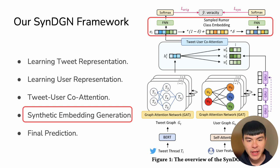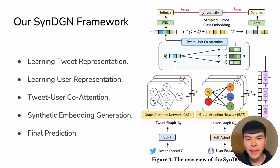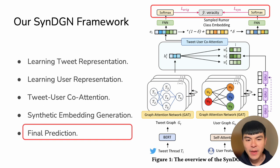Then we perform synthetic embedding generation on the minority class to oversample the minority non-rumor class to enhance our robustness. The final step is to do a final prediction, where we apply a softmax layer on the original embedding, the fused embedding, and the oversampled synthetic embedding.